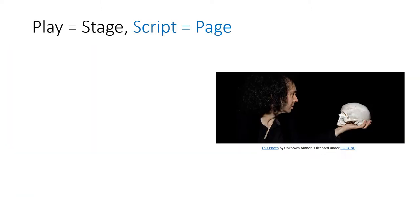For starters, what you see on the page when you read a play is called a script. Scripts are what the actors and crew memorize to bring the play to life in front of the audience. In other words, the play is what you see on the stage, while the script is what you see on the page.